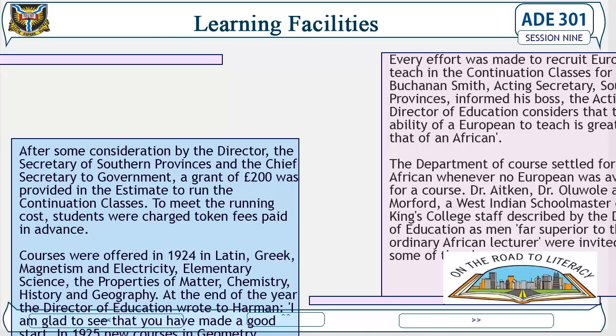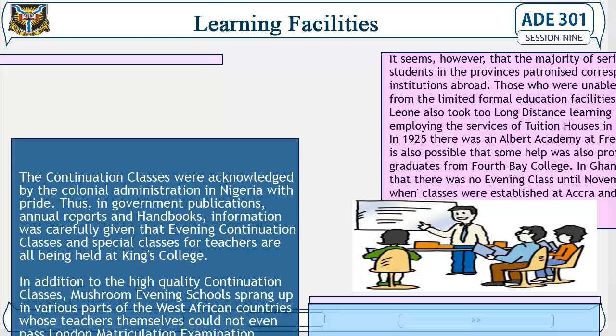The department settled for an African whenever no European was available for a course. Dr. Aken, Dr. Oluwali, and Dr. Mofford — a West Indian schoolmaster on the King's College staff, described by the Director of Education as far superior to the ordinary African lecturer — were invited to take some of the classes. The continuation classes were acknowledged by the colonial administration in Nigeria with pride. In government publications, annual reports, and handbooks, information was carefully given that evening continuation classes and special classes for teachers were being held at King's College.